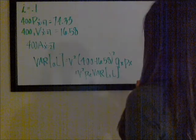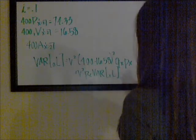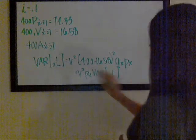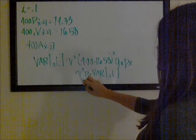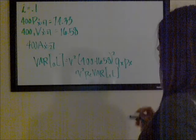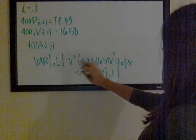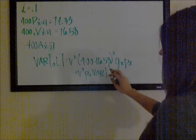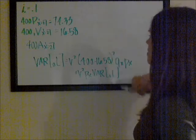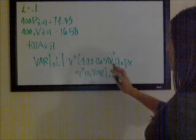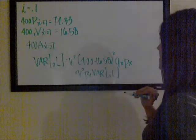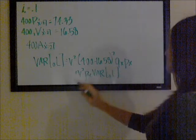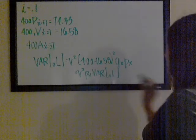Hattendorf's Theorem gives us the variance of the incurred losses. I did another video on the intuition behind this formula, so check that out if you want. The formula for the variance of the loss at issue is: v² times (benefit minus next period's reserve)² times qx times px, plus v² times px times the variance of the loss random variable at time 1. We're given the benefit of 400 and the reserve at time 1 of 16.58, so we have what we need for most terms.